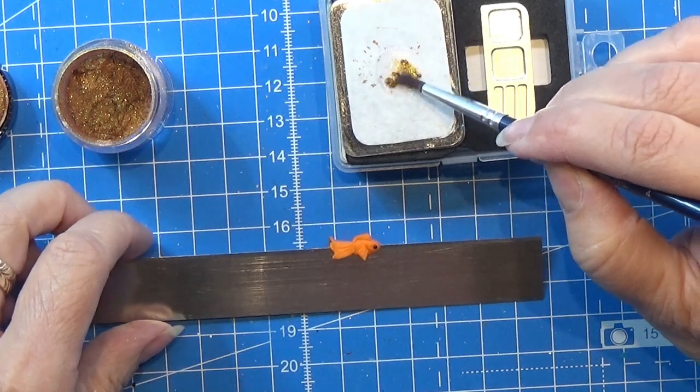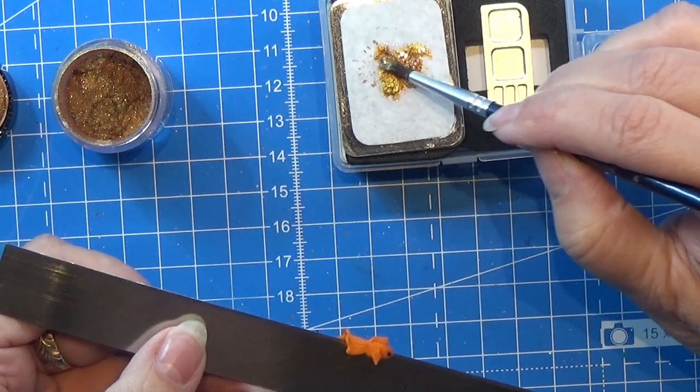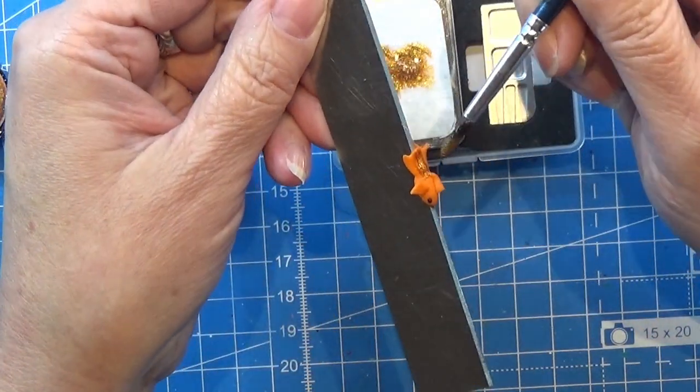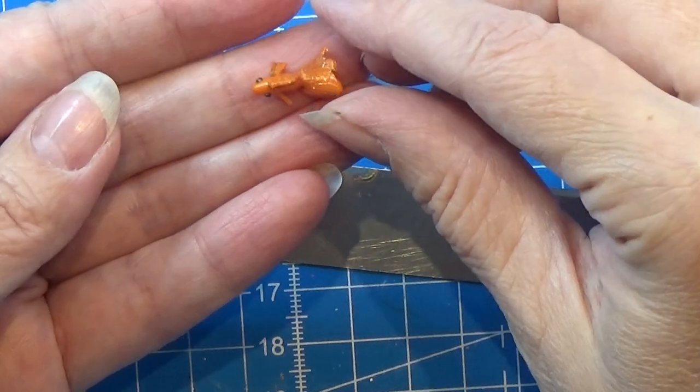Make sure you mix the two parts really good together. This way you will get a more even coat on your little fish. Then when it's dry all you do is take it off the knife blade and there you have a cute little goldfish.